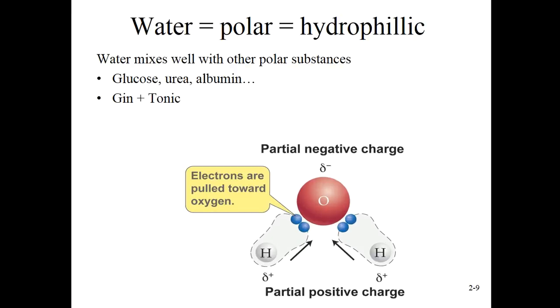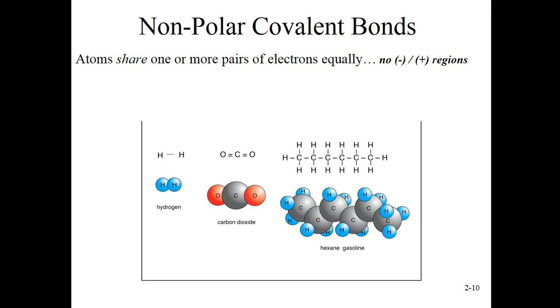Water mixes well with other substances that are also polar, like ethanol, glucose, urea, and albumin. This is, of course, why gin and tonic makes an excellent drink. Gin being part ethanol and part water and tonic being mostly water, they all blend together. So if you make this drink, they blend. The gin isn't sitting on top of the tonic or the other way around.